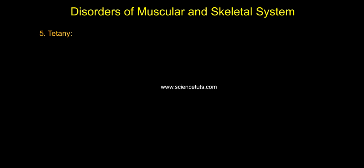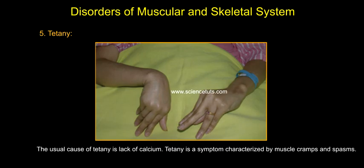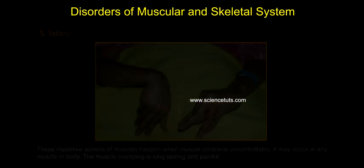Tetany is involuntary contraction of muscles, which may be caused by disease or other conditions that increase the action potential frequency. The usual cause of tetany is lack of calcium. It is characterized by muscle cramps and spasms. These repetitive actions happen when muscles contract uncontrollably, and may occur in any muscle in the body. The muscle cramping is long-lasting and painful.